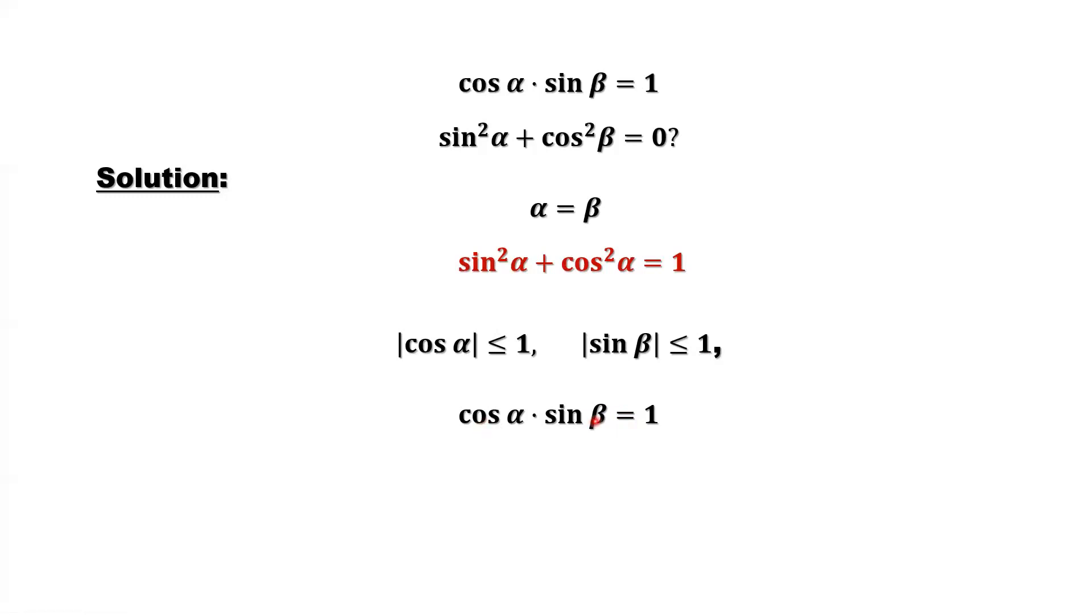that means it cannot be one. In order to be one, both of the absolute values must be equal to one.